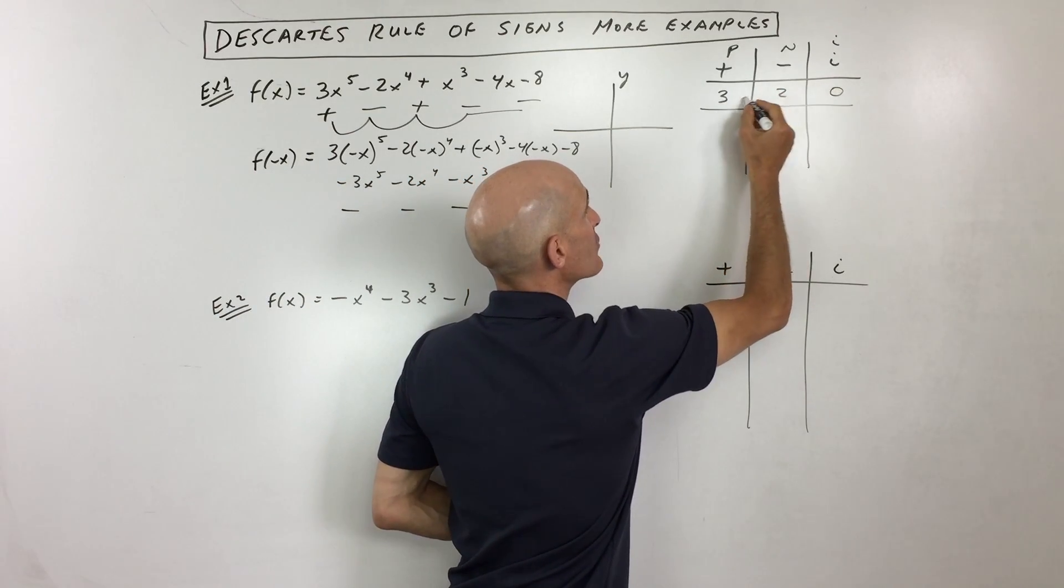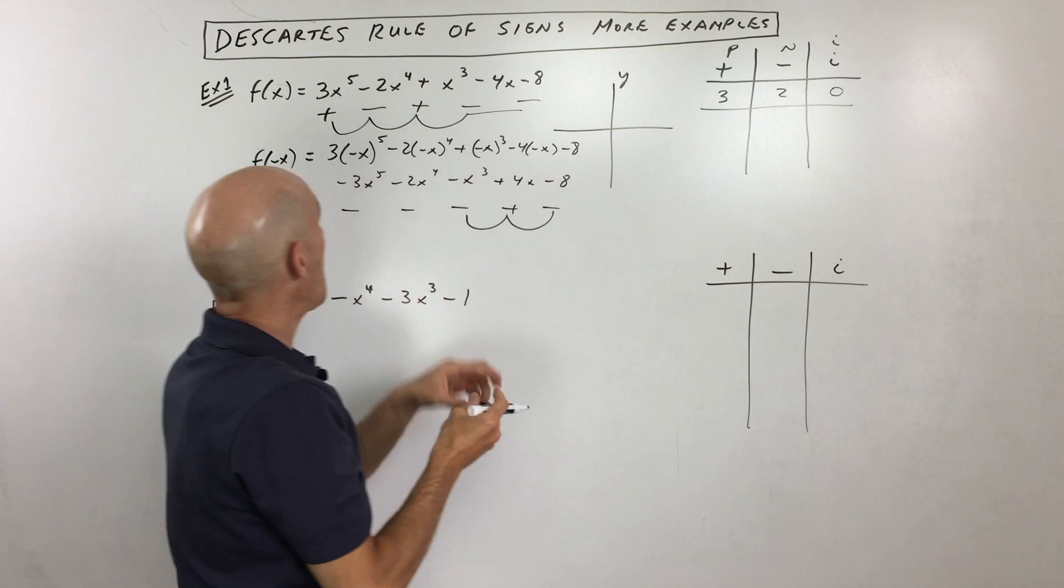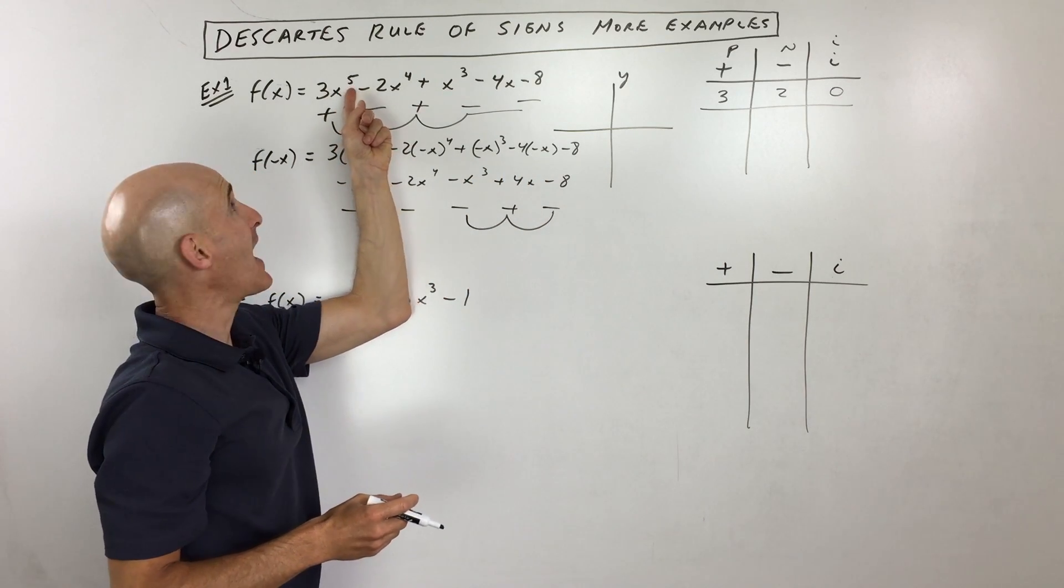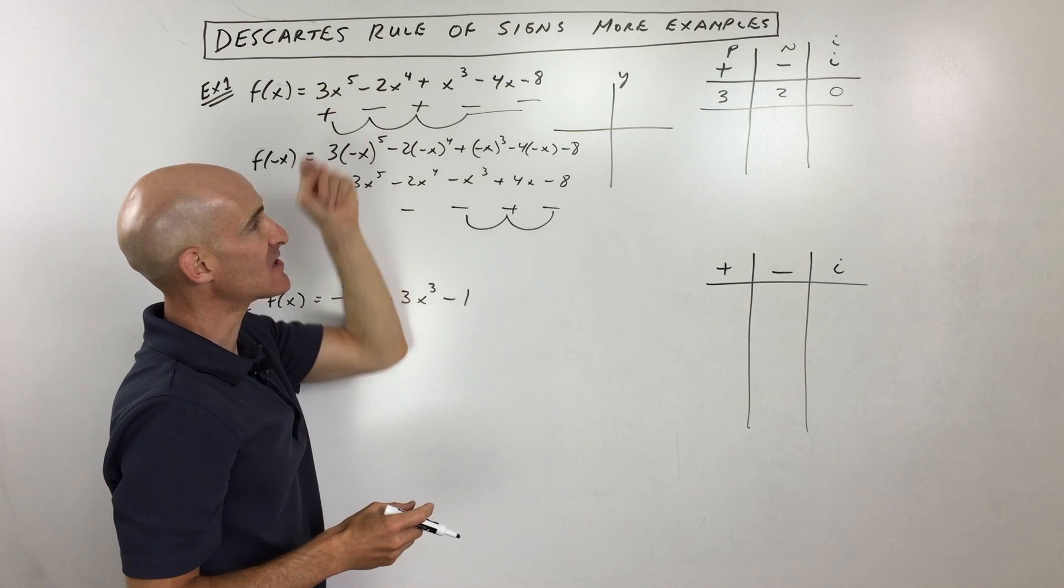And then if we add across here, 3 plus 2 plus 0 equals 5, it should always add up to this highest degree of the polynomial, 5 in this case.